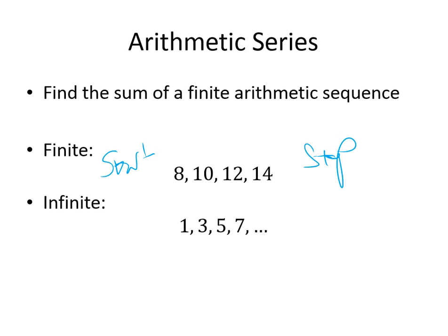The second one is infinite — there's a starting point, but the dot-dot-dot means it continues on the same pattern forever. We're not able to find the sum of an arithmetic sequence if it's infinite, because the numbers just keep growing bigger and bigger. So it needs to be finite. If it doesn't have a stopping point, we cannot find the sum.